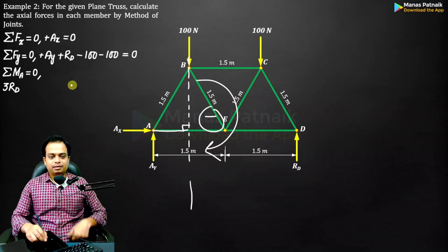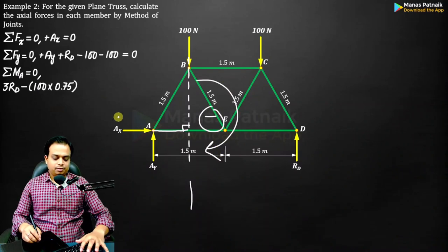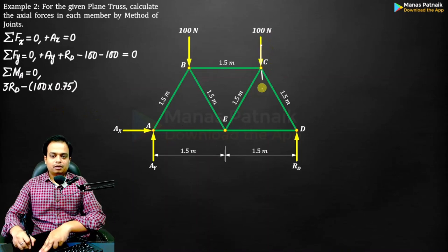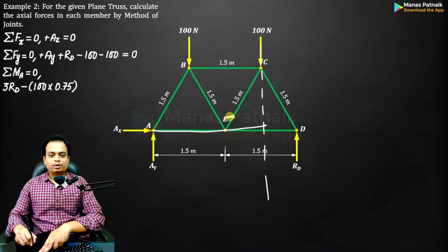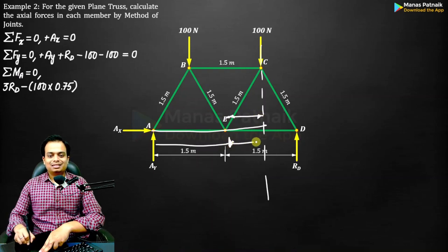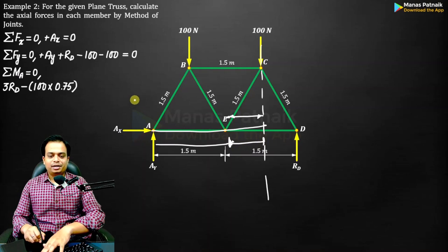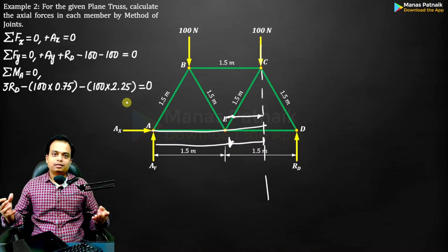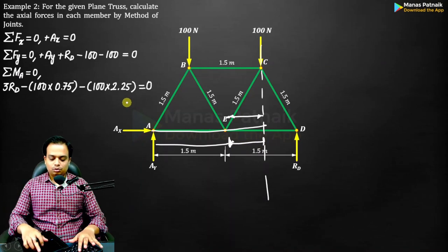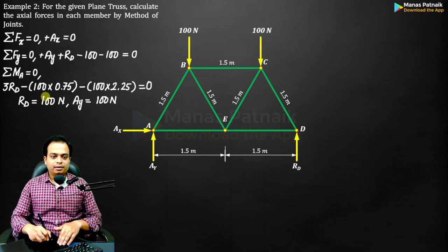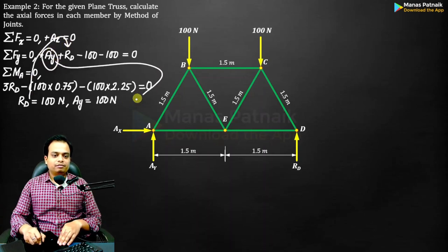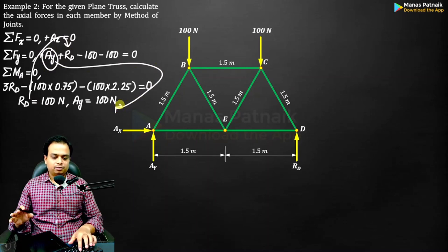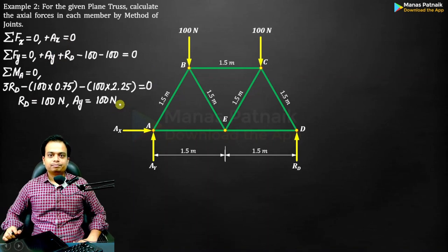Similarly, this 100 N multiplied by its distance over here: 1.5 plus 0.75 will be 2.25 — same clockwise sense, negative sign. You simply need to solve this equation to get the value of RD. Once you put the value of RD back, you get AY, which works out as 100 N.